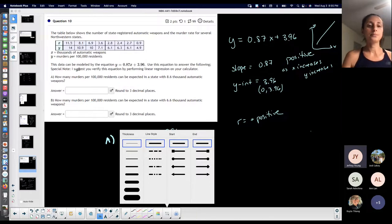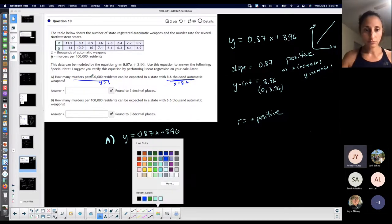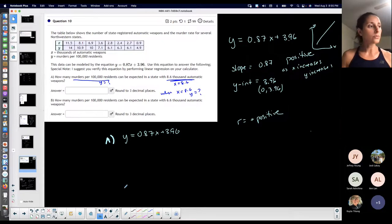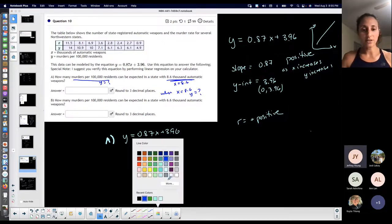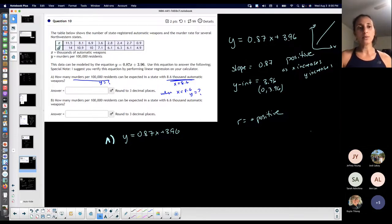How many murders per 100,000 can be expected in a state with this many automatic weapons? They give me the amount of automatic weapons, so they give me my x. In other words, when x is 8.6, y is what. You got to figure out which variable they're giving to you. They gave me the number of automatic weapons which matches my x, so that's going in x and I'm going to find y.